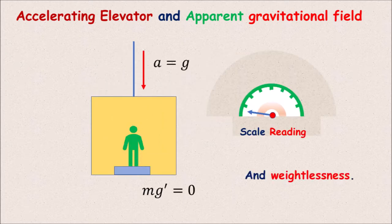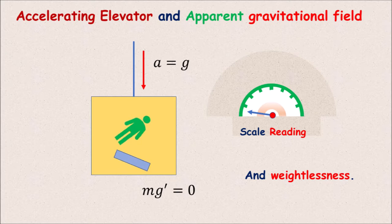At this point, the downward acceleration is equal to g, or the elevator is in the state of freefall motion. And the person feels completely weightless, like the astronauts in a spaceship orbiting the earth.